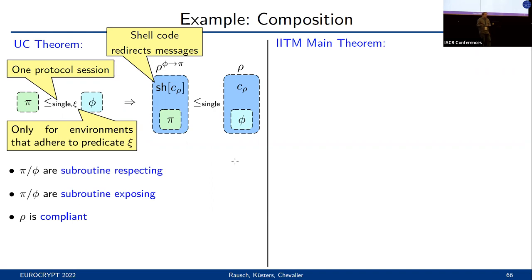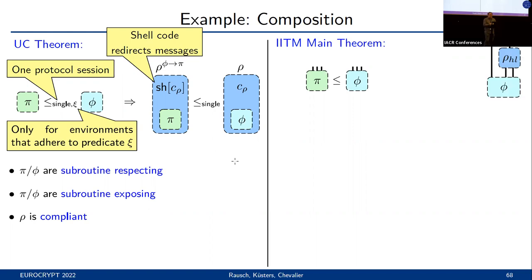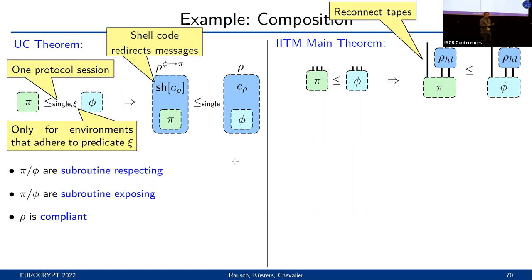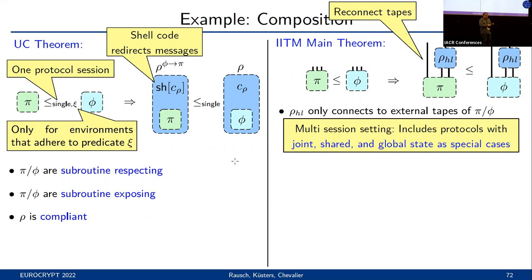In comparison, the IITM model considers two different types of composition. The main theorem states: if we have some protocol pi realizing some protocol phi, and we build a higher-level protocol on top of phi that connects to some — but not necessarily all — of its external tapes, then the composed protocol where we replace the subroutine realizes this original protocol. In the IITM setting, the composed protocol is expressed by reconnecting tapes. Observe that this directly considers a multi-session setting and subroutines can still share some tapes with the environment, which is why this theorem captures as special cases also protocols with joint state, shared state, and global state.